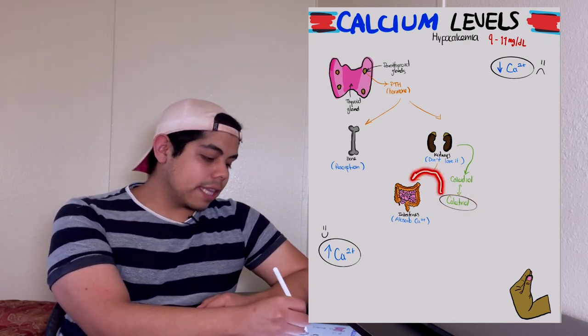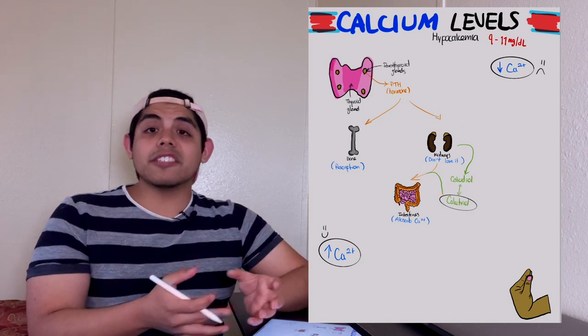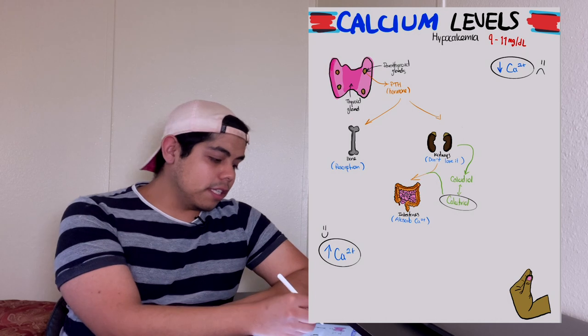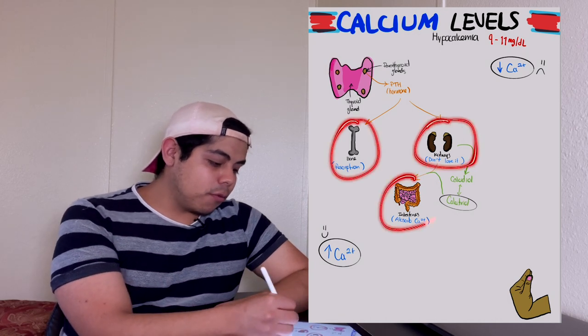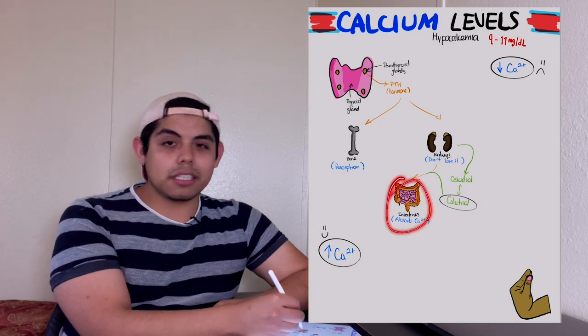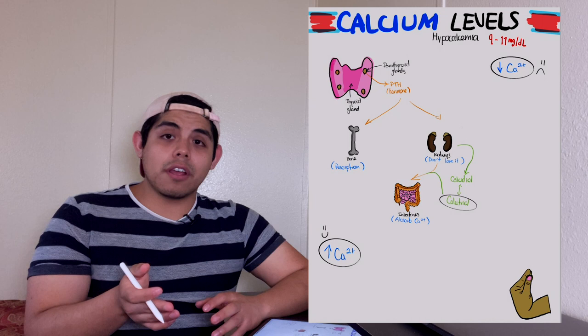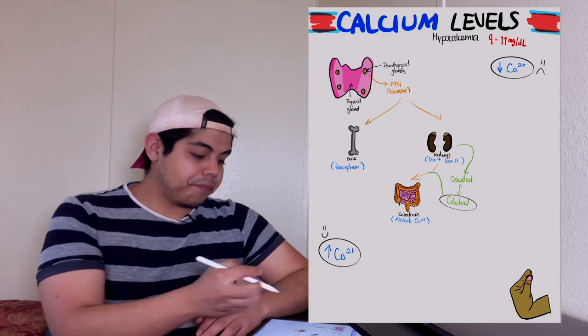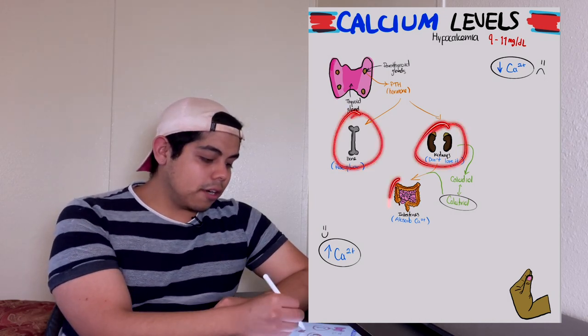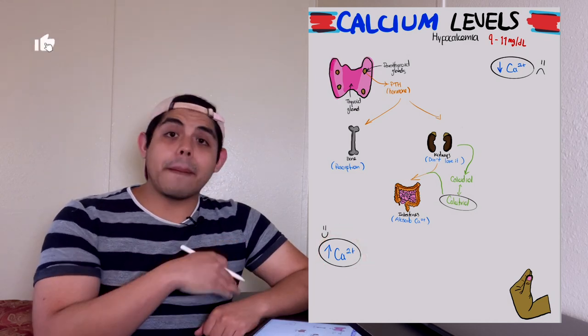The calcitriol will target the intestines in order to absorb more calcium from the diet. So these are the three different types of organs that will be targeted. The intestines are targeted by calcitriol, but after the release of PTH, these three organs are going to be targeted to bring those calcium levels back into normal.